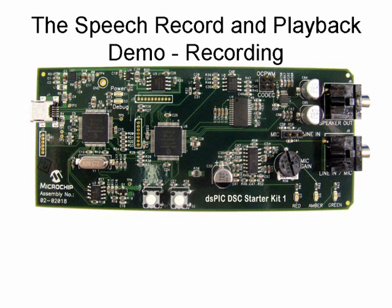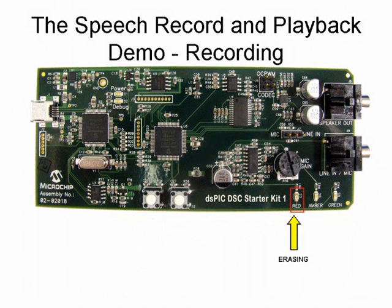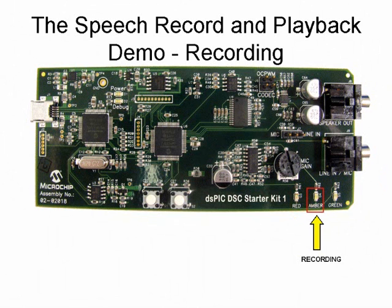But first, here is a description of how the recording works. When you press switch S1, the red LED will turn on. This indicates that the application is preparing the serial flash memory for recording speech data by erasing the user section of the flash memory. Once the erase operation is complete, the red LED will turn off and the yellow LED will turn on, indicating that the application is in record mode and is now recording.